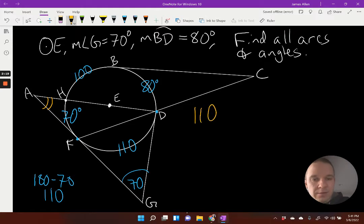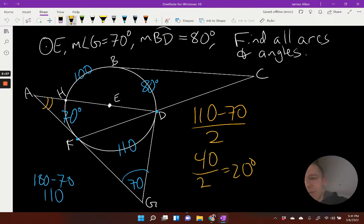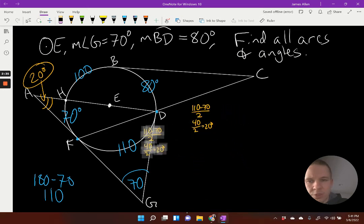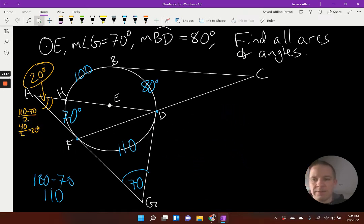110 minus 70 divided by two. That's going to give me 40 divided by two, which equals 20 degrees. So we've got 20 degrees. Let's keep going. Let's keep cruising. Pop that over there.